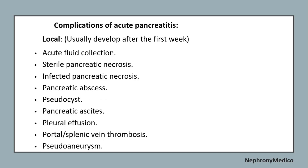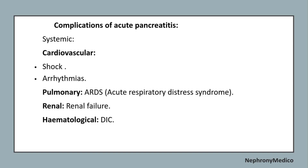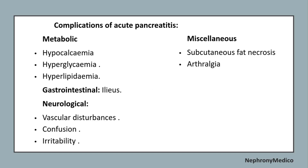Complications of acute pancreatitis include local complications such as acute fluid collection, sterile pancreatic necrosis, infected pancreatic necrosis, pancreatic abscess, pseudocyst, pancreatic ascites, pleural effusion, portal or splenic vein thrombosis, and pseudoaneurysm. Systemic complications include cardiovascular (shock and arrhythmia), acute respiratory distress syndrome, renal failure, DIC, and metabolic complications such as hypocalcemia, hyperglycemia, hyperlipidemia, subcutaneous fat necrosis, arthralgia, ileus, vascular disturbances, confusion, and irritability.